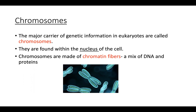Chromosomes are the major carrier of genetic information. They are found in the nucleus of the cell and contain chromatin fibers, which are mixtures of DNA and proteins. The cell cycle must be done with accuracy and fidelity because these chromosomes contain genetic information that dictates how we exist. Our genes on these chromosomes dictate features and characteristics like hair color, eye color, and how we function physically and physiologically. It is very important that chromosomes are duplicated and transmitted to daughter cells with accuracy.